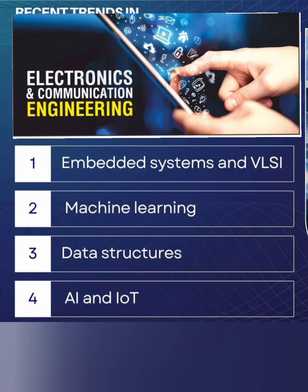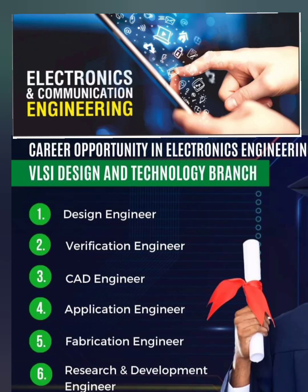Based on the current trend, these are the new areas where things are moving. Embedded systems and VLSI together is a skill you should develop. Machine learning is also important in ECE because electronics communicates with machine language. Data structures is another area, and artificial intelligence and IoT are among the most predominant areas showing very good job trends for electronics and communication engineers.